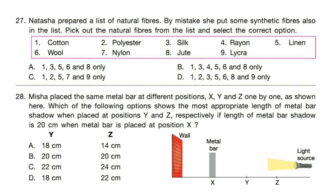Question 28: Misha placed the same metal bar at different positions X, Y and Z one by one. Which option shows the most appropriate length of the metal bar's shadow when placed at positions Y and Z respectively, if the shadow length is 20 cm at position X? The shadow will increase when placed at Y and Z. Correct answer is option C — Y: 22 cm, Z: 24 cm.